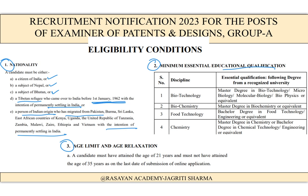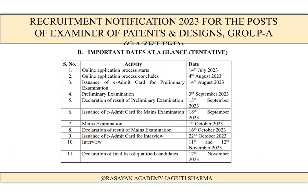For the minimum essential education qualification — specifically for Chemistry — a Master's degree in Chemistry (M.Sc.) or a Bachelor's degree in Chemical Technology (B.Tech.) is required. So both M.Sc. postgraduates and B.Tech. graduates can apply. Regarding the age limit, a candidate must have attained the age of 21 years and must not have attained the age of 35 years as on the last date of submission of the online application.